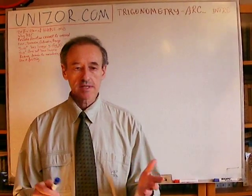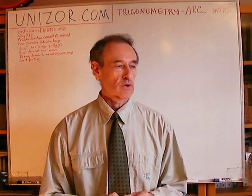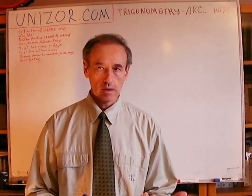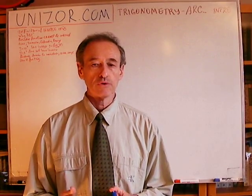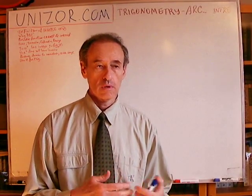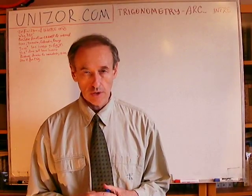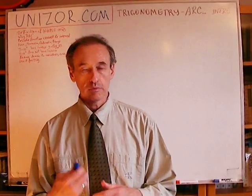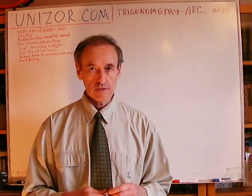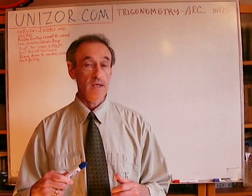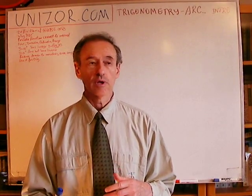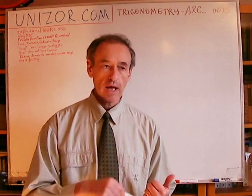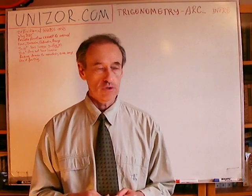We did study sine, cosine, and other trigonometric functions. They establish the value for an angle, usually measured in radians. The question is about the reverse transformation: if you know the value of a sine or a tangent, can we determine the angle which has this particular sine or tangent?